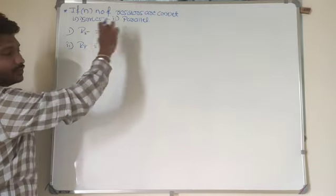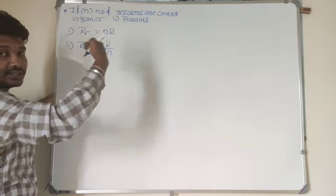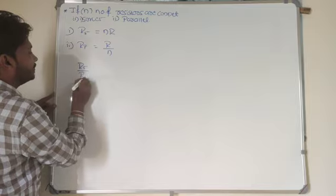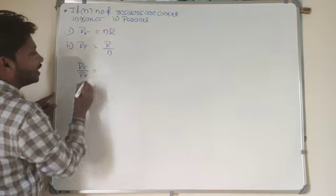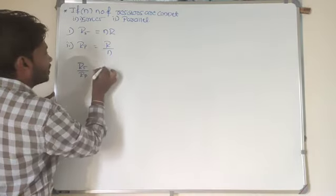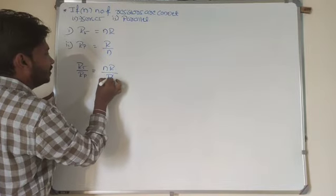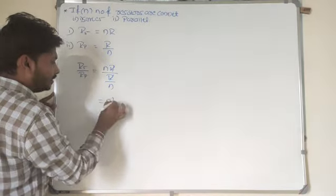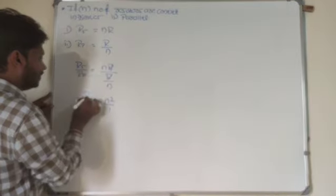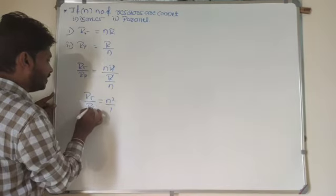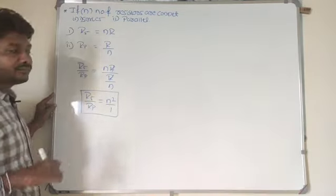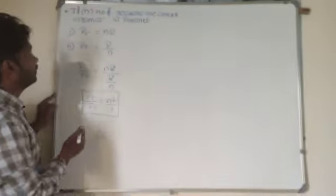What will be the ratio of R_s to R_p? If you connect in series first, R_s = n×r, and in parallel R_p = r/n. So R_s divided by R_p equals (n×r) divided by (r/n). The r terms cancel, giving n² / 1. So the ratio R_s / R_p = n².